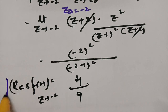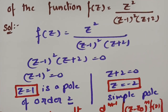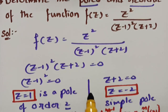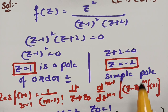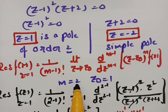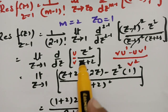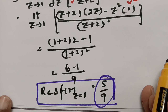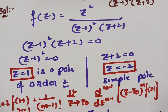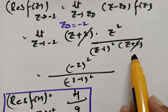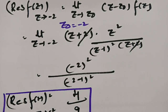To summarize: f(z) = z² / [(z−1)²(z+2)]. Setting the denominator to 0 gives poles z = 1 (order 2) and z = −2 (simple pole). Using the order-2 formula with m = 2, z₀ = 1 and applying the derivative gives residue 5/9. Using the simple pole formula for z = −2 gives residue 4/9.